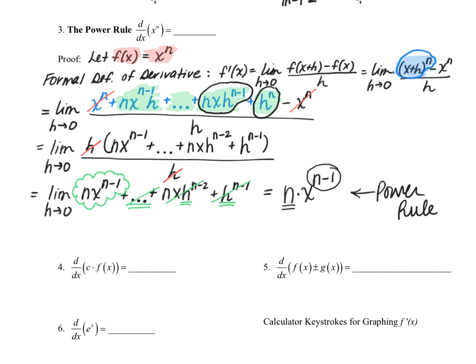So the power rule states: the derivative of x to the n power is n times x raised to the n minus one power. For a quick example, the derivative of x to the fourth power: the exponent four becomes the coefficient, and we subtract one from the power, giving us 4x to the third power.